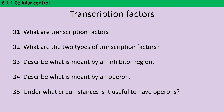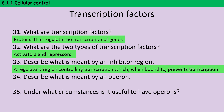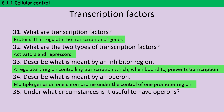Transcription factors are proteins that regulate the transcription of genes, and the two types are activators and repressors. An inhibitor region is a regulatory region of DNA controlling transcription — if it is bound to, then it prevents transcription from happening. An operon is a section where multiple genes on one chromosome are all under the control of one promoter region, meaning they're all going to be transcribed together and never individually transcribed. It's useful to have operons if certain genes are always expressed at the same time.